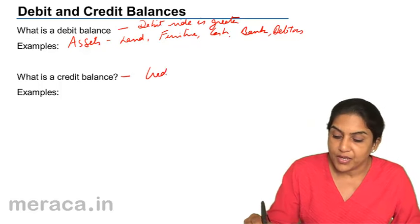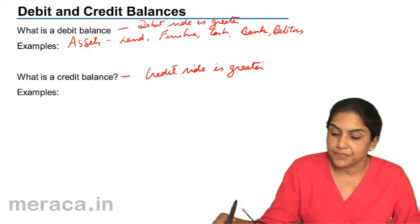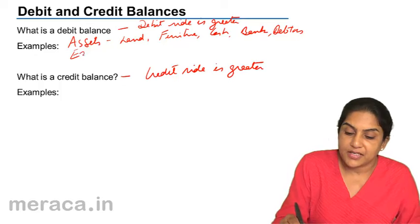Therefore, a credit balance is when the credit side is greater, represents, here it is assets and expenses.